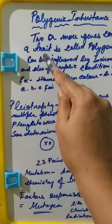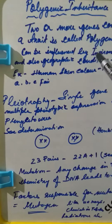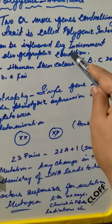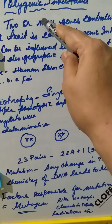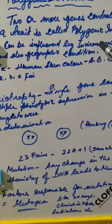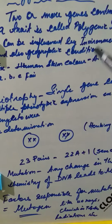Polygenic traits can also be influenced by certain factors, such as environment and geographic conditions, which influence the expression of the genes.